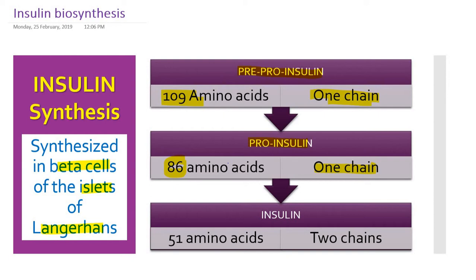Just before release into circulation, around 31 to 34 amino acids are cleaved off, giving us the 51 amino acid active insulin. While converting pro-insulin to insulin, the amino acids that are cleaved off are called C-peptide.